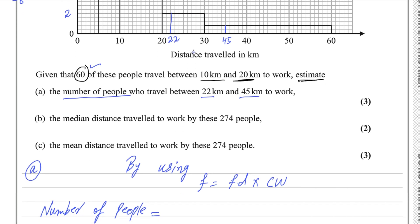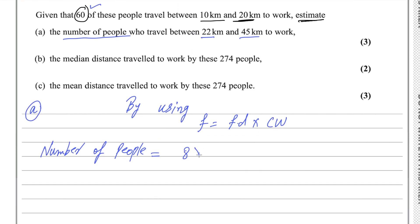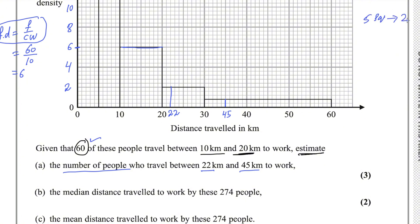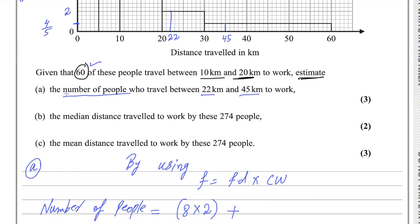So class width 8 multiplied by frequency density 2 gives 16. Plus from 30 to 45, class width is 15. For the frequency density there, 5 small squares give a density of 2, so 1 small square gives 2/5, and 2 small squares give 4/5 — which you can write as 0.8. So the frequency density for that portion is 4/5.